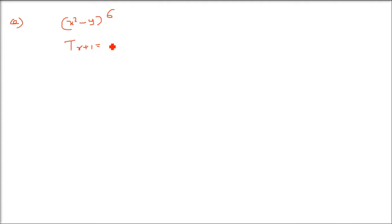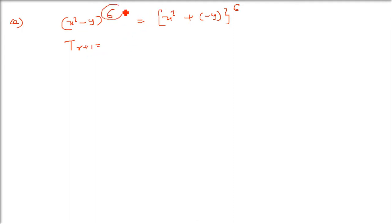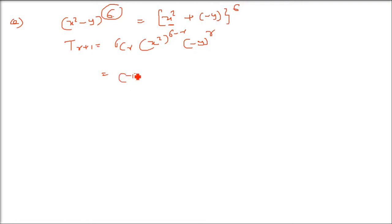For (x² - y)^6, write it as (x² + (-y))^6. T(r+1) = nCr · x^(n-r) · a^r, where n=6. So T(r+1) = 6Cr · (x²)^(6-r) · (-y)^r. Separating the sign: (-1)^r · 6Cr · x^(2(6-r)) · y^r, which simplifies to (-1)^r · 6Cr · x^(12-2r) · y^r. This is the general term.